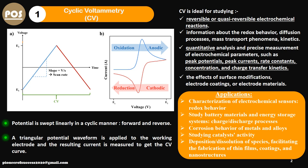In cyclic voltammetry we focus on cases that are reversible, irreversible, or quasi-reversible in nature, and CV can characterize those reactions. CV is used for electrochemical sensors, study of battery materials and battery degradation, energy storage systems like supercapacitors, corrosion behavior of metals and alloys, studying catalytic activity, and deposition of metals.